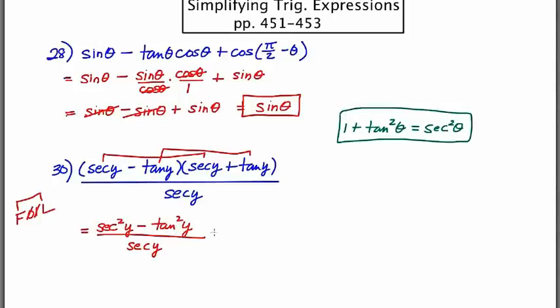This whole numerator just equals 1. 1 over secant theta, or secant Y, rather. And then we'll just use the reciprocal relationship and call this cosine Y.